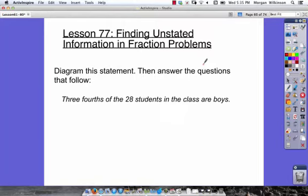Lesson 77 is called Finding Unstated Information in Fraction Problems. Our first question says to diagram this statement, then answer the questions that follow.